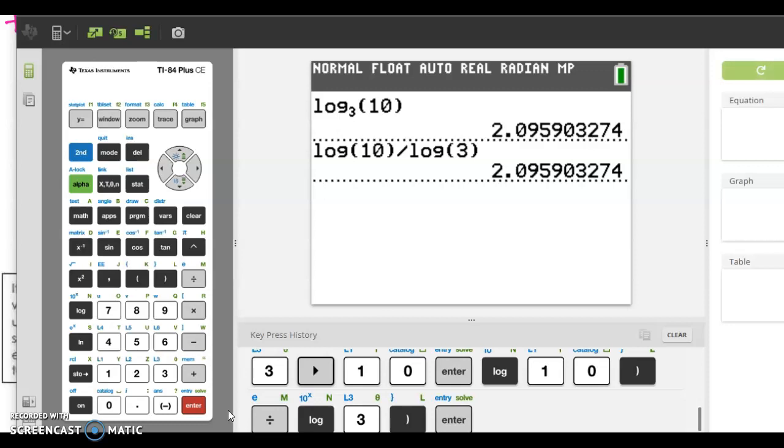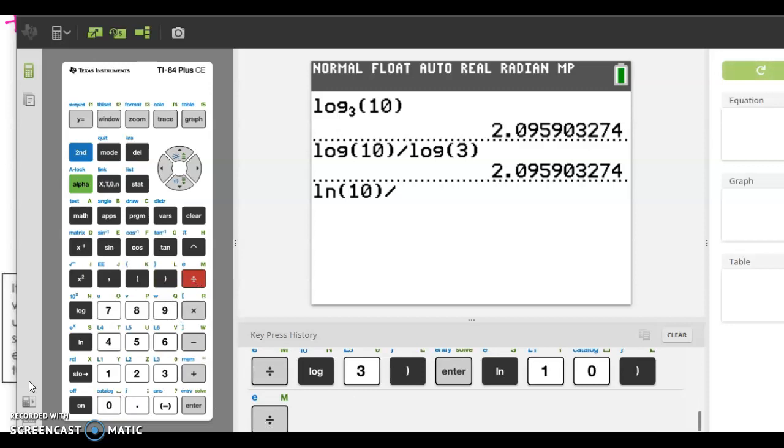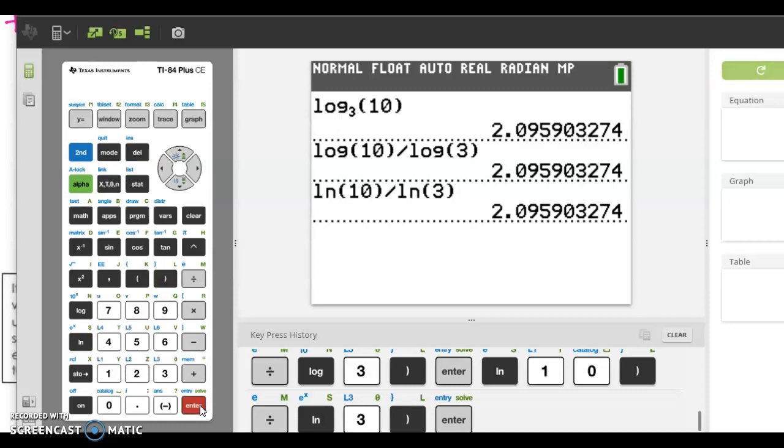And I could have chosen whatever base I wanted to. If I wanted to do, let's just say I did log base e, which is the natural log of 10, divided by the natural log. I'm just doing the same numbers, but I'm making sure the base is the same. You'll see it's the same.